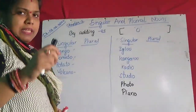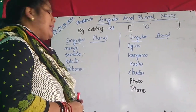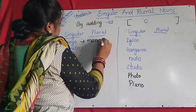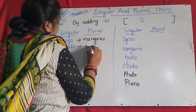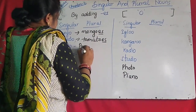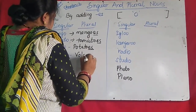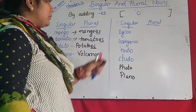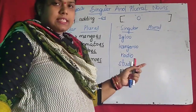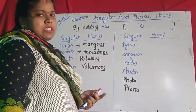The next rule is also by adding ES. If the word is ending with O, then the plural will be formed by adding ES. Suppose 'mango' — plural is M-A-N-G-O-E-S: 'mangoes.' 'Tomato' — T-O-M-A-T-O — adding ES: 'tomatoes.' 'Potato' — P-O-T-A-T-O — adding ES: 'potatoes.' But here, words also end with O but ES will not be added — only S. So how do you know whether words ending with O take ES or S?